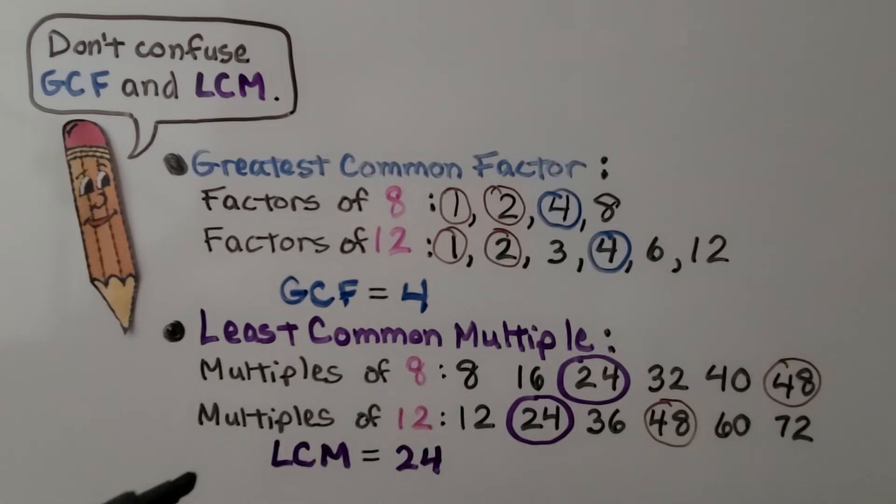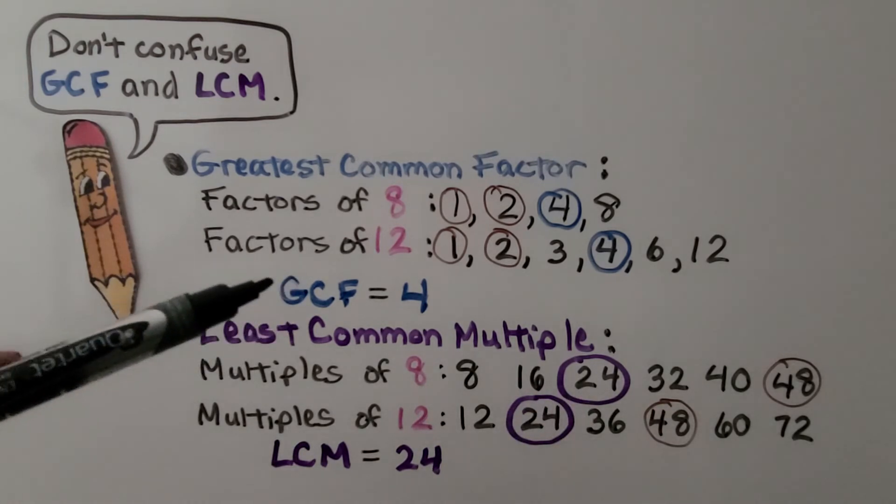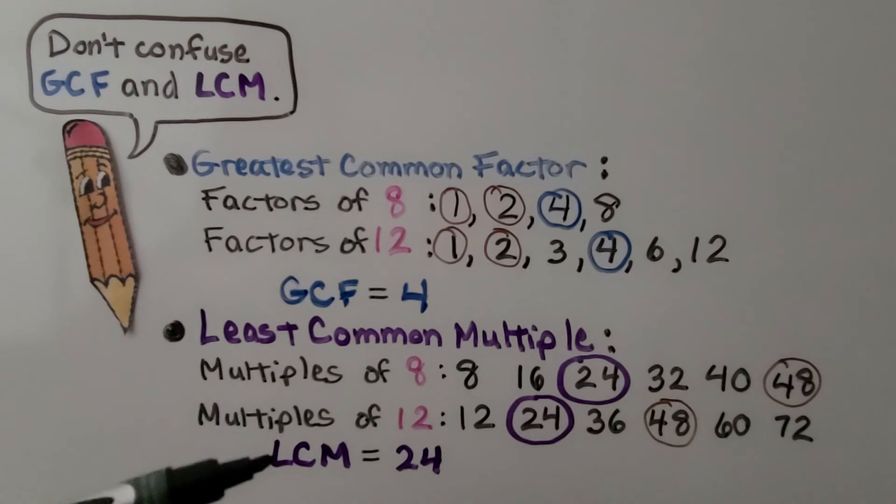But if we look for the least common multiple for 8 and 12, we write the 8 facts and the 12 facts, and we find the multiple that is the least. That's 24. So the GCF for these two numbers is 4, but the LCM for these two numbers is 24. Be very careful not to confuse these.